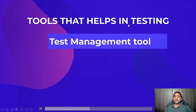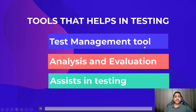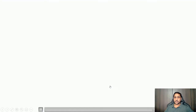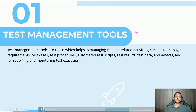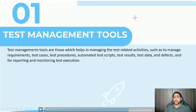Next, tools that help in testing. We have three types: test management tool, analysis and evaluation tool, and tools that assist in testing. Test management tools are those which help in managing test-related activities — such as managing requirements, test cases, test procedures, automated test scripts, test results, test data, and defects, as well as reporting and monitoring test execution.